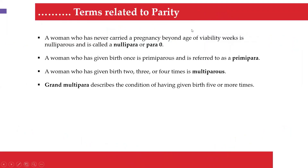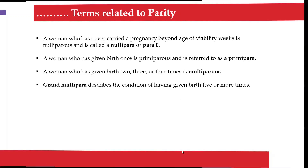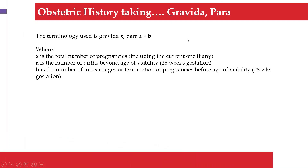Terms related to parity: a nulliparous woman, or para zero, is one who has never carried a pregnancy beyond the age of viability. A primipara has carried a pregnancy past the age of viability at least once. A multipara has given birth two, three, or four times. A woman who has given birth five or more times is called a grand multipara.